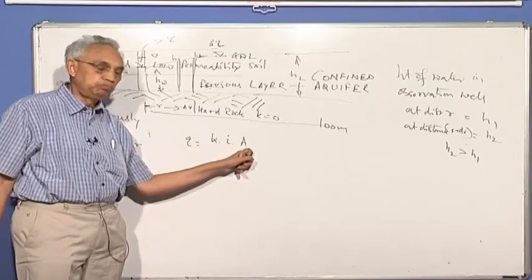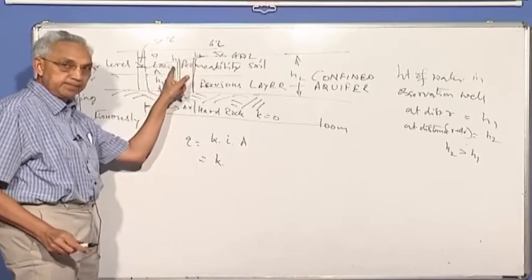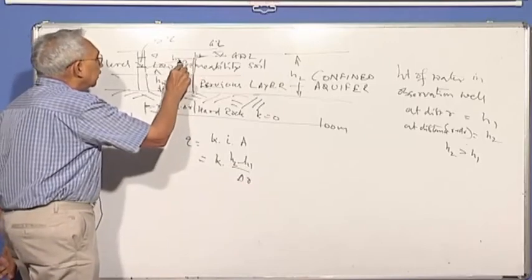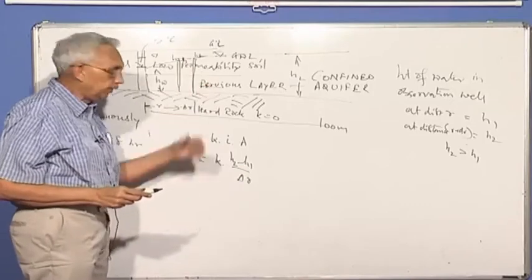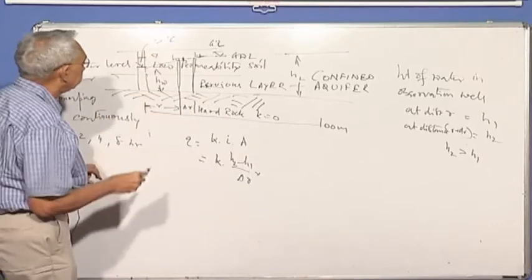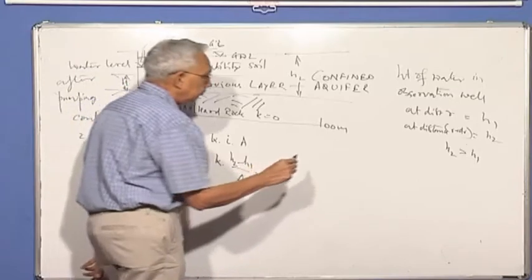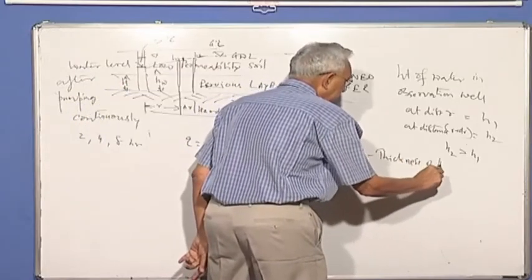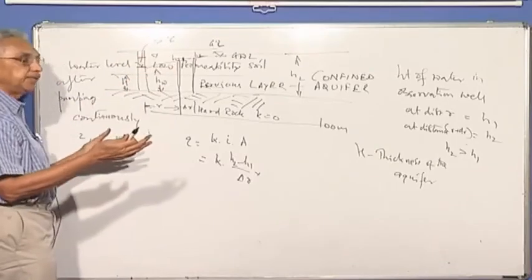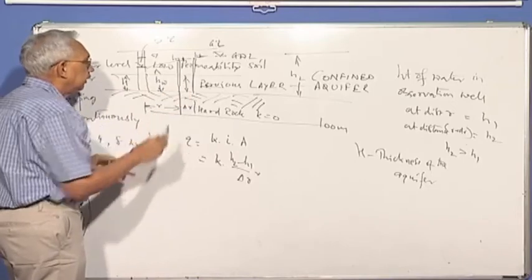So I will write it as K. What will be the gradient? It is nothing but H2 minus H1 by delta R. That's the distance travel. H2 minus H1, that is delta H, divided by delta R. And what will be the area? If you look at this point here, the thickness of the stratum here is H. We said the pervious stratum, confined aquifer, the thickness is H. Please remember, H is the thickness of the aquifer. Will there be any flow above the aquifer or below the aquifer? We know that because the permeabilities are very low, there will be no flow. So the only flow that takes place is through the aquifer. So the thickness is H.